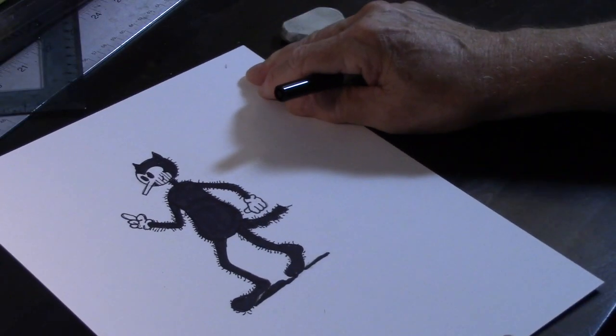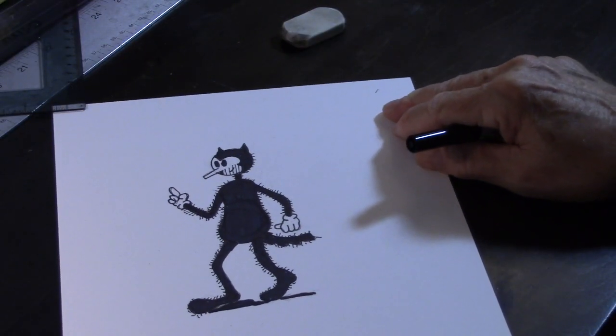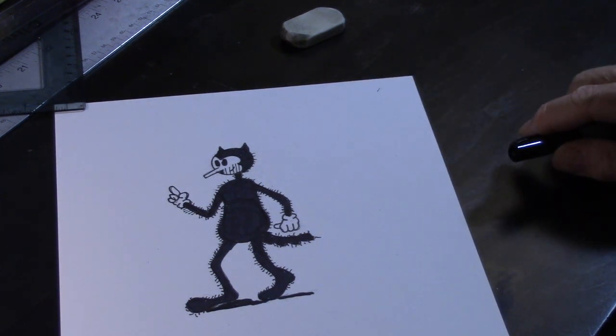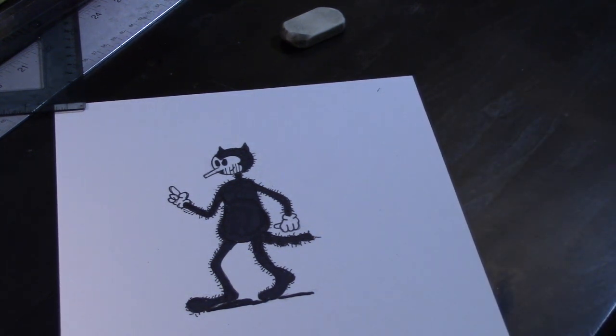Now there's the finished cat. I'll turn it this way so you can see a little better. There he is. That was my idea for a character.